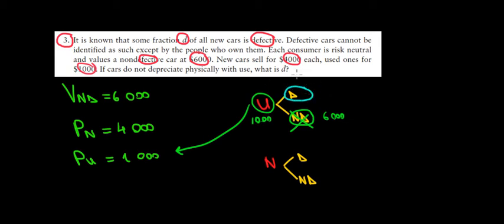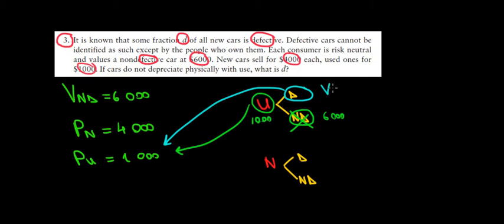The only way a seller will put a used car on the market is if it's a bad one — a defective one — and it would sell for a thousand dollars. Since consumers know there's no way to put a good car on the used market, they expect that used cars on the market are going to be defective. So the price they're paying equals the value of a defective car, meaning the price of one thousand dollars is the value of a defective car.